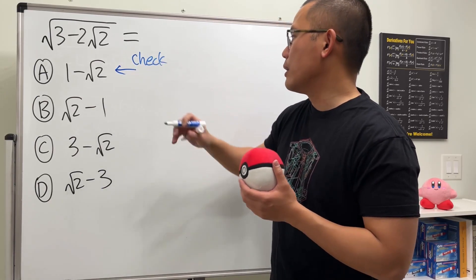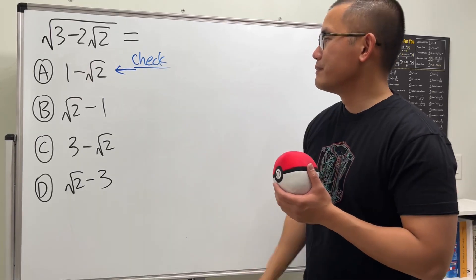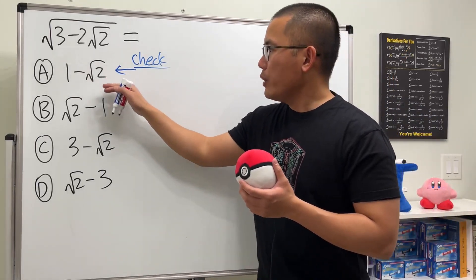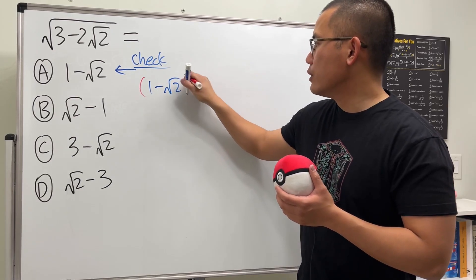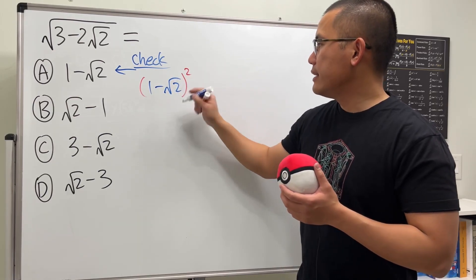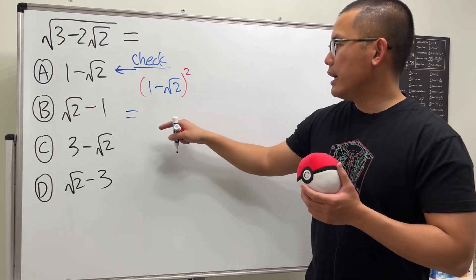The goal is I'm going to square that, so we have (1-√2)². We can just multiply this out, and perhaps I'll just show you all the steps: (1-√2)(1-√2).